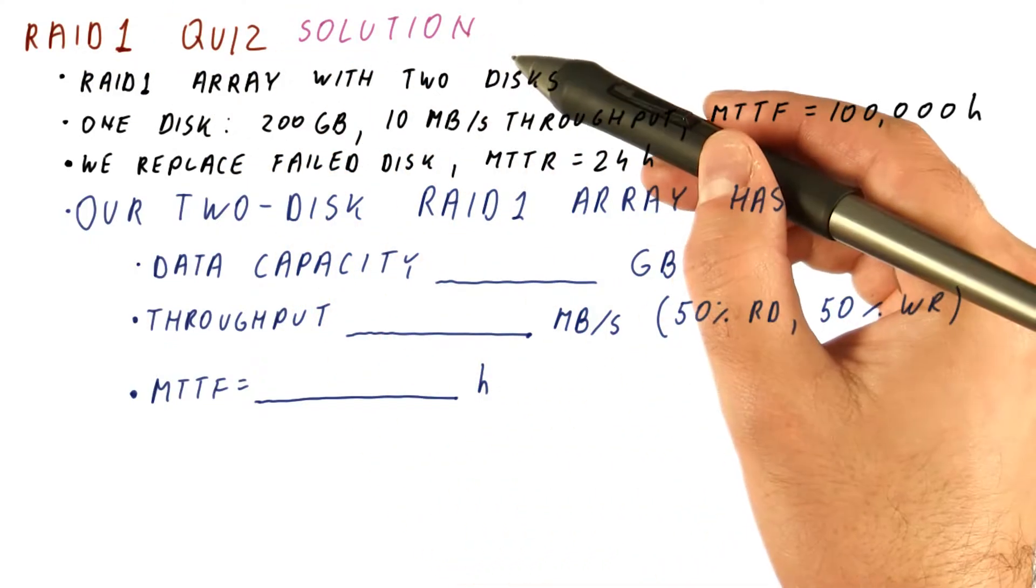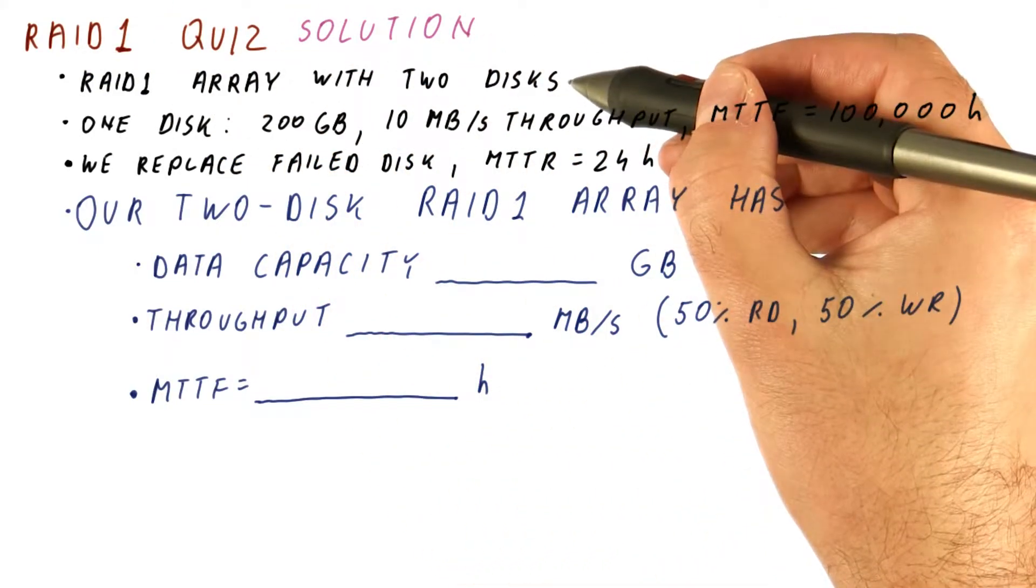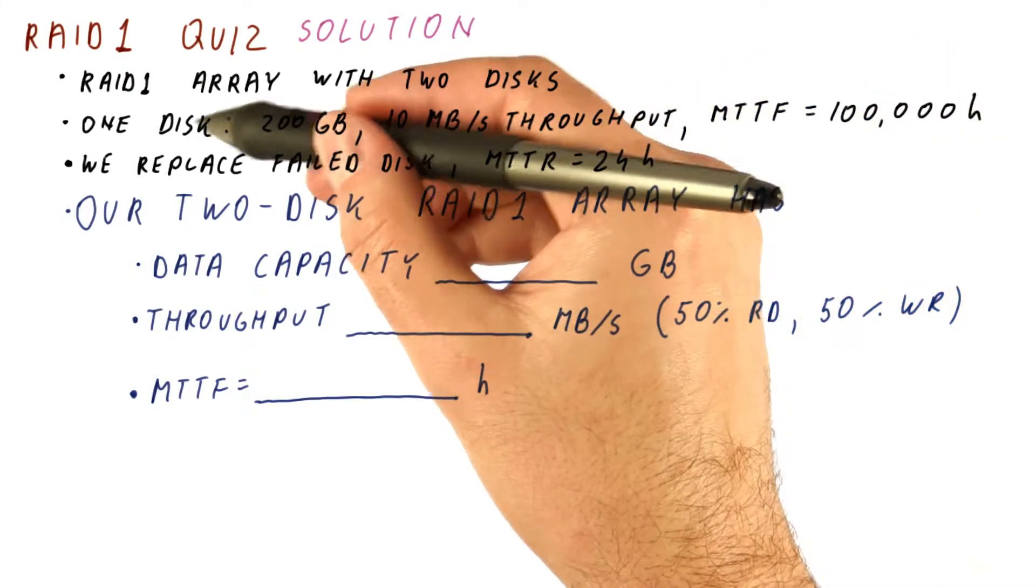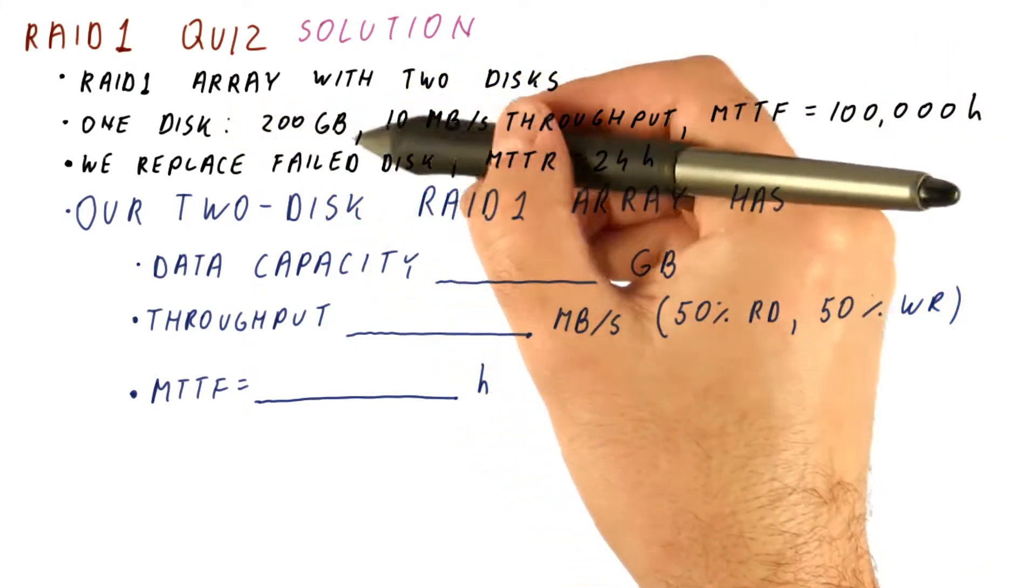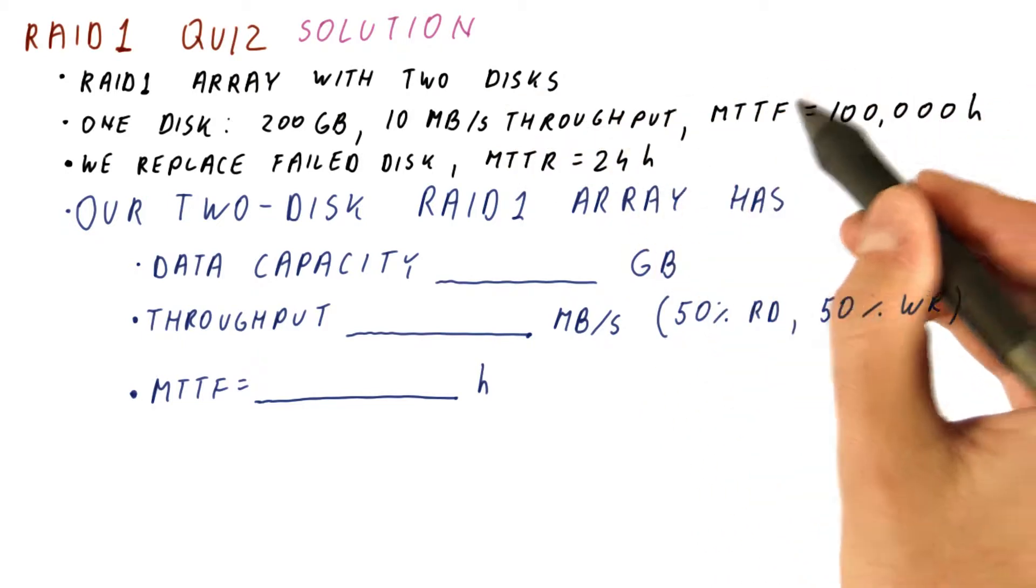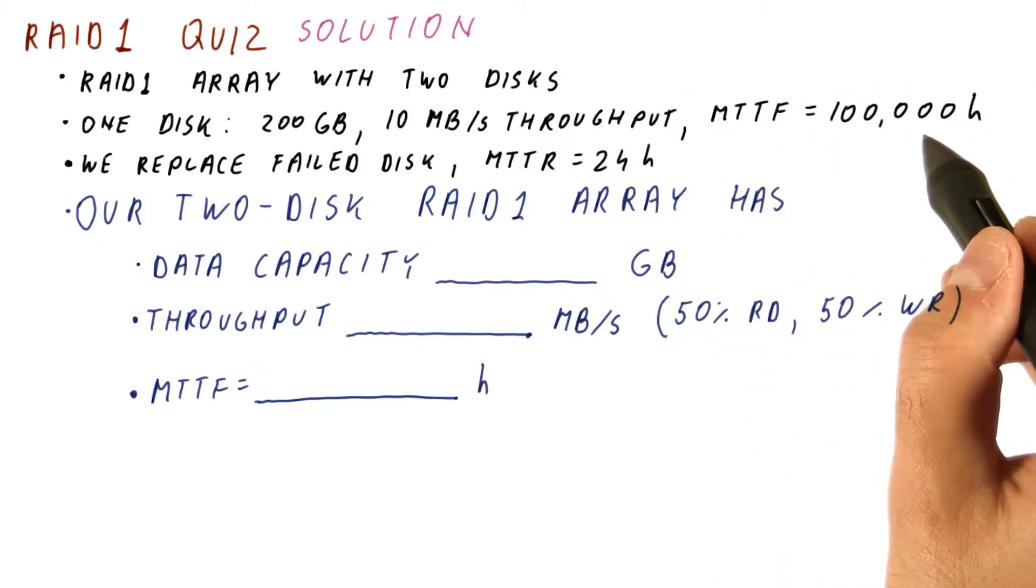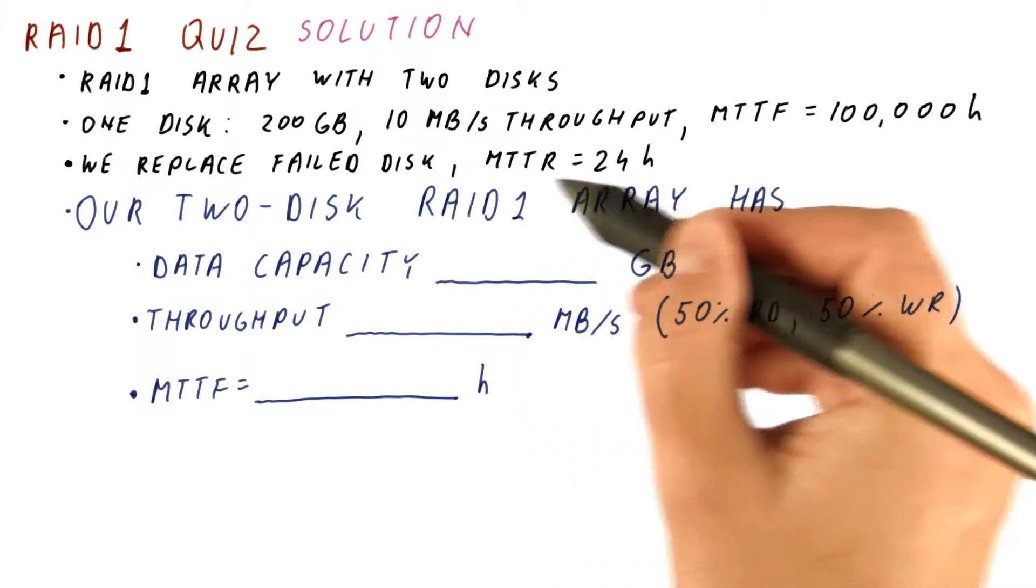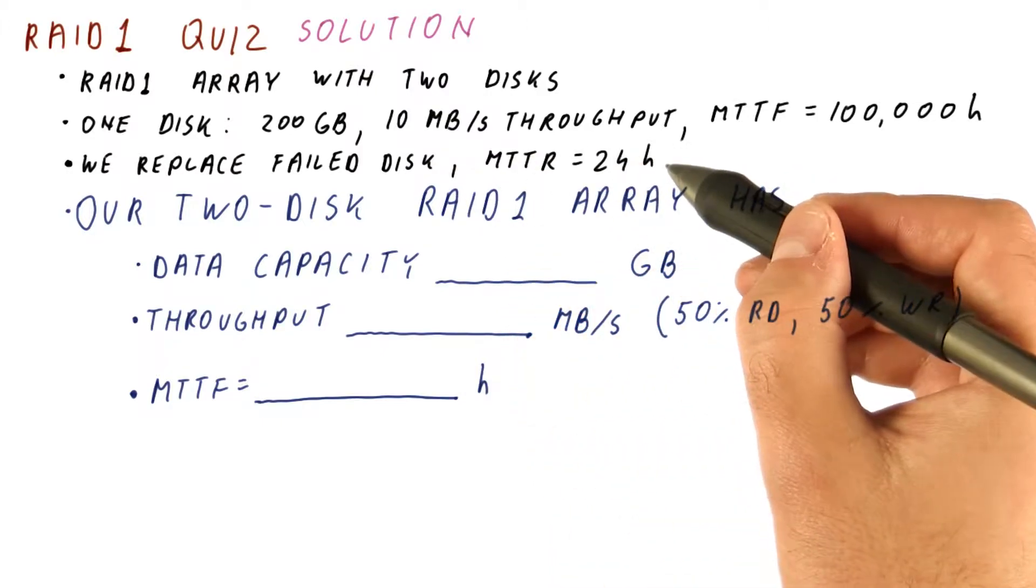So let's look at the solution to a RAID 1 quiz. We have a RAID 1 array with two disks. A single disk in this array is a 200 gigabyte disk with a throughput of 10 megabytes per second and an MTTF of 100,000 hours. And when a disk fails, we replace it and it takes us 24 hours to do that.